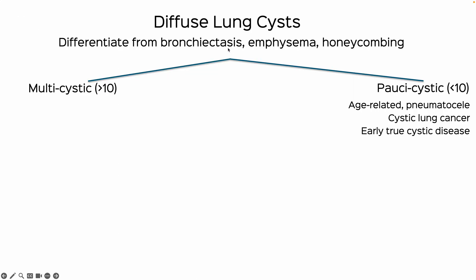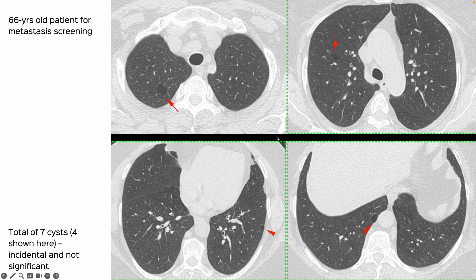Once we have confirmed we are dealing with cystic lung disease, the next question is whether these cysts are significant or not. Counting the cysts is not a bad idea. Typically if we see about 10 or fewer cysts, they are usually not significant. Here is a 66-year-old screened for metastasis with about 7 cysts — you can do thick minips to reconfirm the number. These are not significant and we can essentially ignore them.